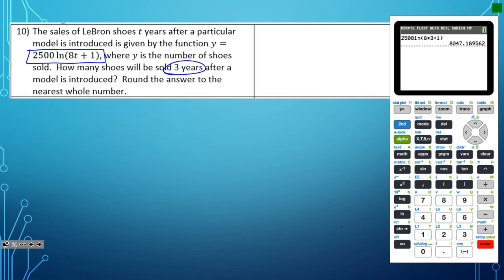So what you need to type into your calculator would be 2,500 and then ln and then 8 times 3 plus 1. And I type that into the calculator over here.